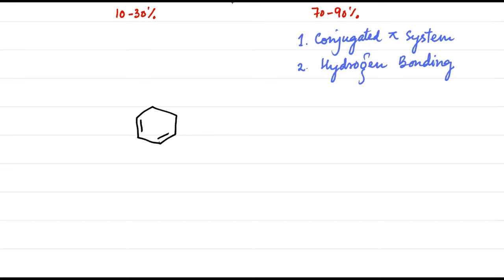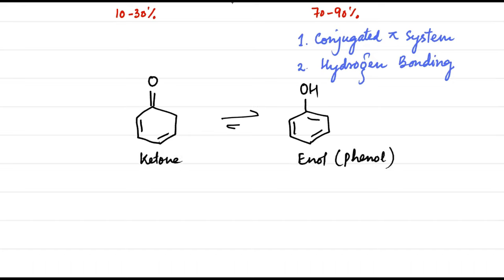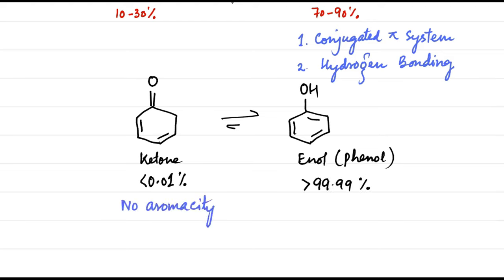Phenol is an extreme example, in that the concentration of the ketone is practically negligible. In this case, the ketone lacks aromaticity, while the enol is aromatic and significantly more stable. Hence, the enol form — that is, phenol — is more stable and exhibits substantial presence at equilibrium.